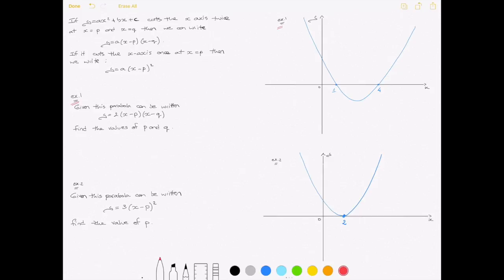Well, all we need to do to answer this type of question is use the fact that this parabola cuts the x-axis at both 1 and 4, those two values. And quite simply, what root factoring allows us to state is that y equals 2 times x minus 1 times x minus 4.